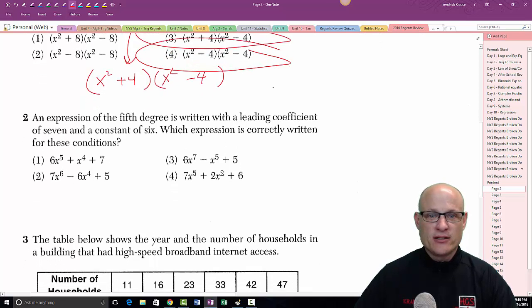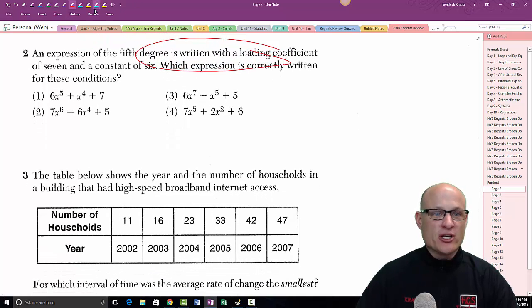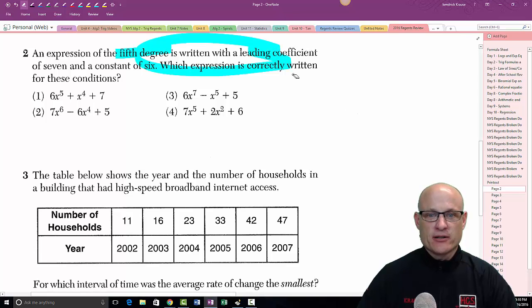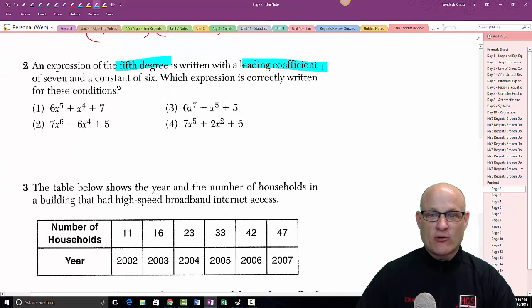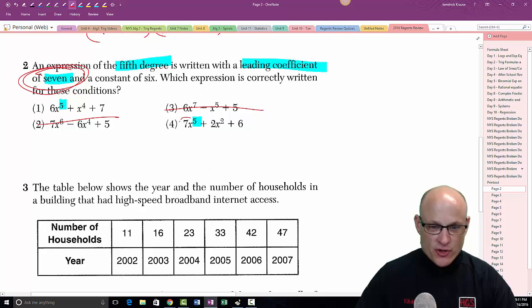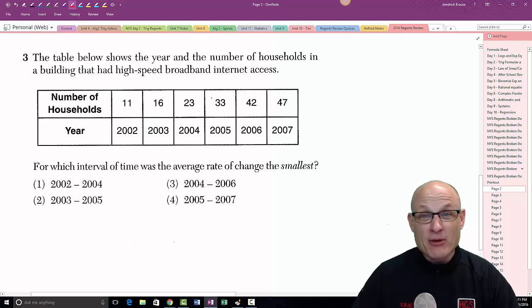An expression of the fifth degree is written with a leading coefficient of seven. Well, a fifth degree just means the highest exponent is a five or a summation or a sum of five. So this has a five and this has a five, so we're already down to two choices. And a leading coefficient of seven means the first term is a seven. So there's your answer.